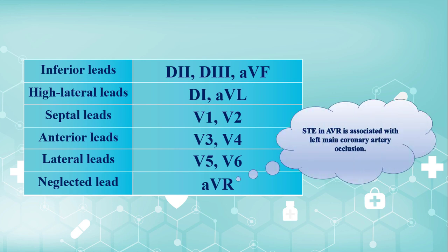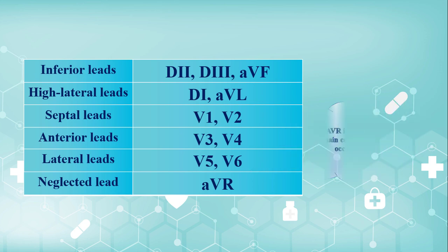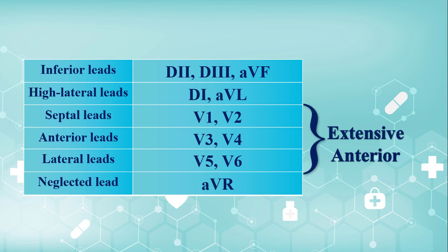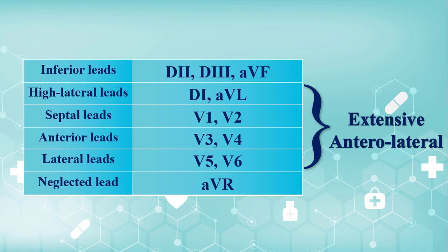ST elevation in AVR is associated with left main coronary artery occlusion. ST elevation spanning from V1 to V3 or V4 is known as anteroseptal. ST elevations extending from V3 to V6 are so-called anterolateral. ST elevations involving V1 to V6 are called extensive anterior. Finally, concomitant ST elevations in V1 to V6, D1, and AVL are called extensive anterolateral.